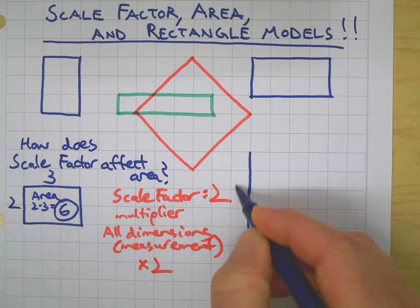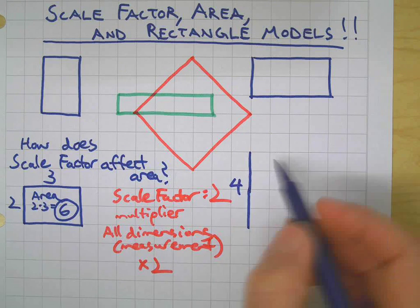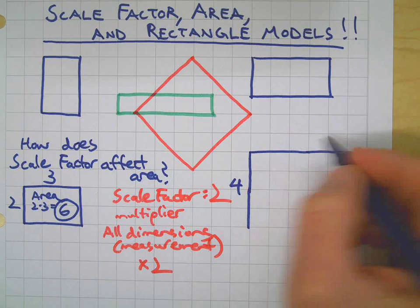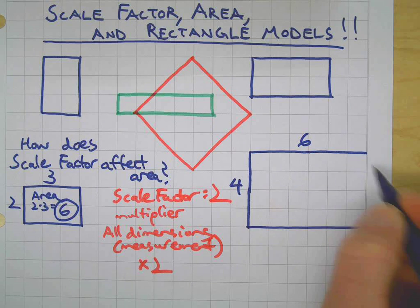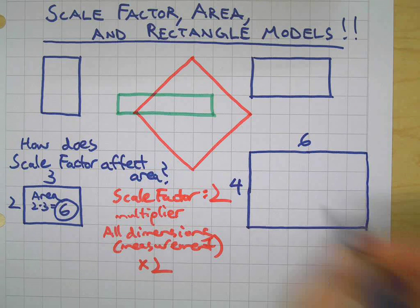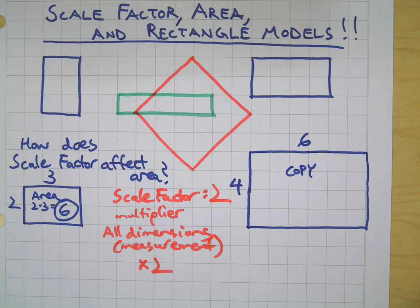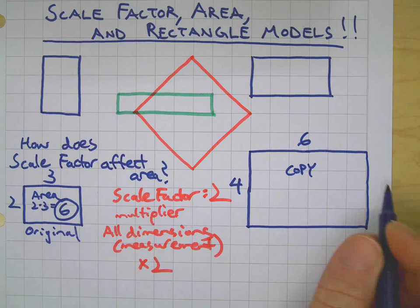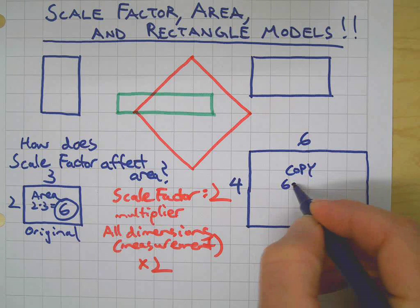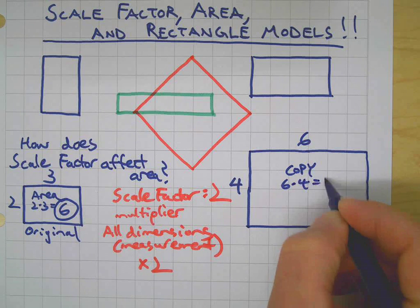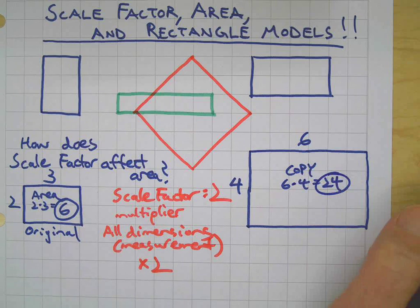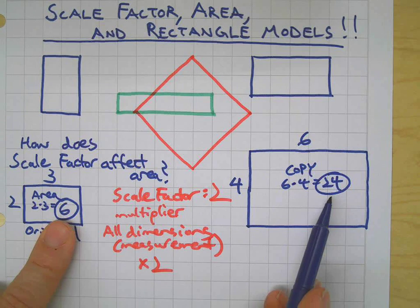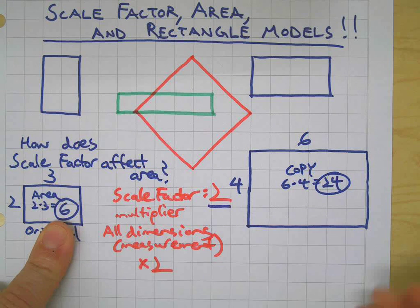So in this example, two times two is four, three times two is six. I'd have my new rectangle — that's my copy over here, and that was my original. If we calculate the area of the copy, it's 24.